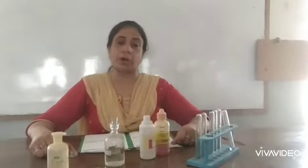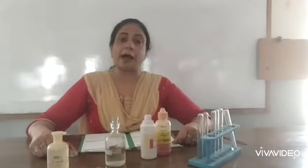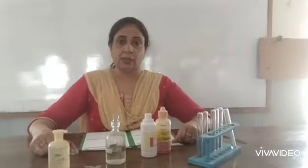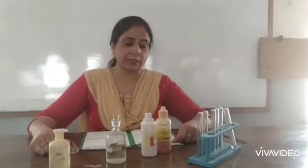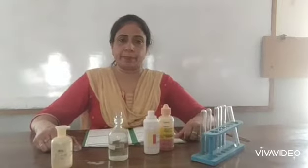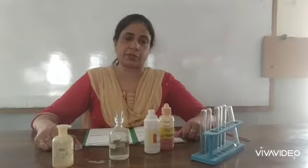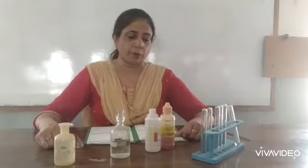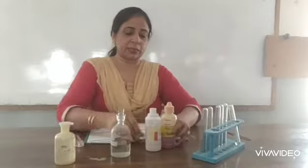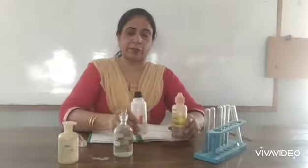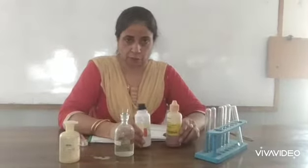Now I am showing you about the artificial indicators — those indicators which are available in the lab, or in the traditional lab, or easily at home. So these are two indicators: artificial indicators, phenolphthalein and methyl orange.